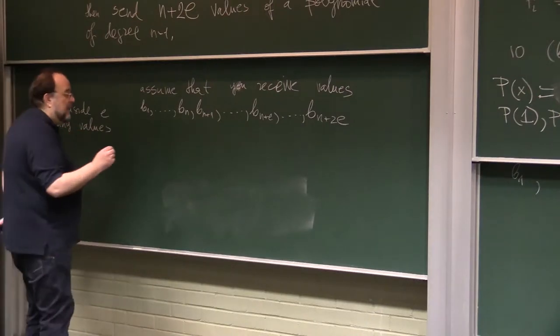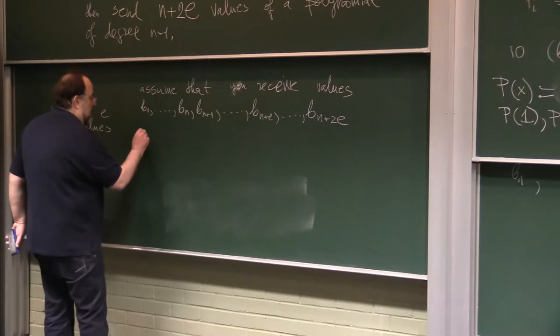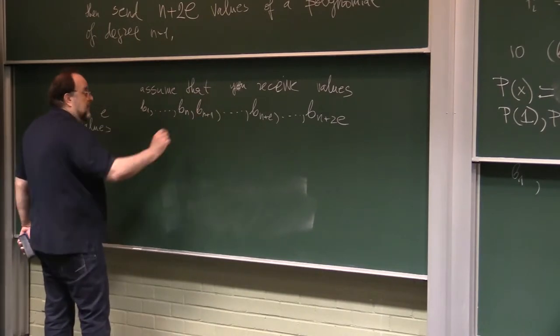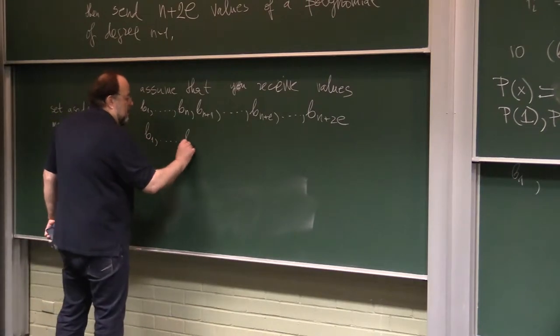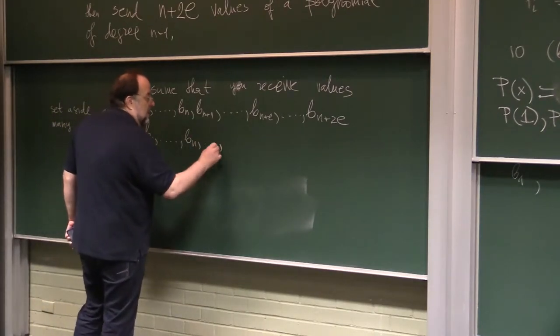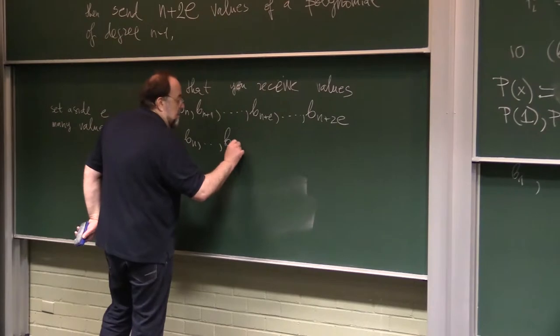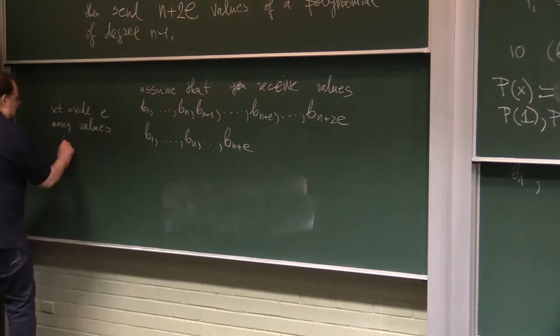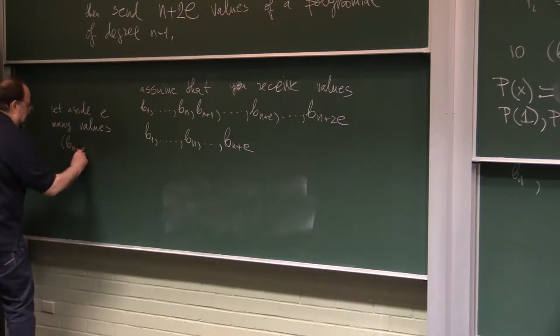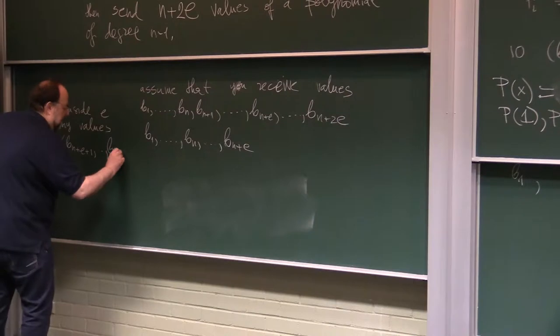We set e many values aside, so say we set aside the last values. So now we have b1 up to bn, up to bn plus e, and our suspects are bn plus e plus 1 up to bn plus 2e.